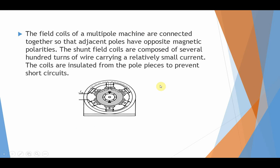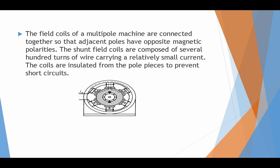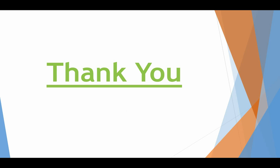This is the diagram showing the field poles: north, south, north, south. The field coils of a multi-pole machine are connected together so that adjacent poles have opposite magnetic polarities — north and south. Shunt field coils are composed of several hundred turns of wire carrying a relatively small current. The coils are insulated from the pole piece to prevent a short circuit. In the coming lecture, we will study the other parts of the generator.